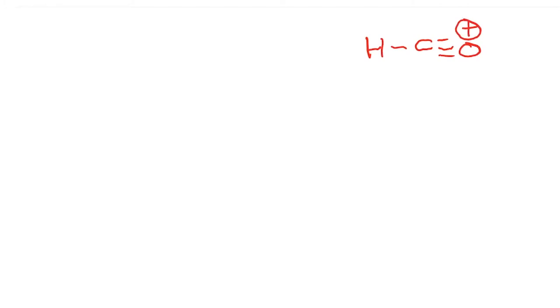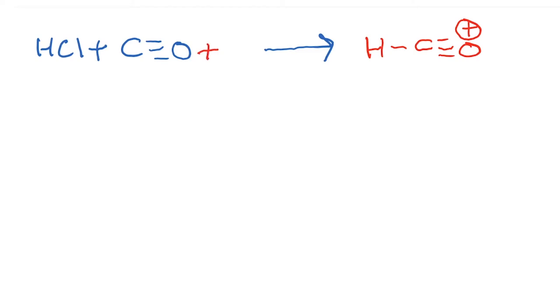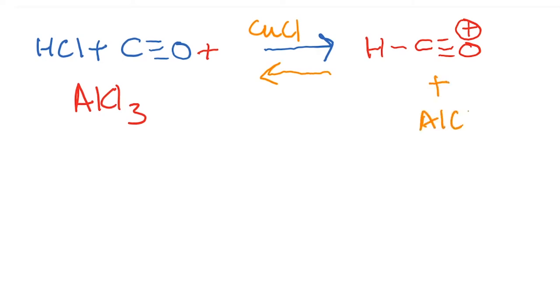The conditions are as follows: basically we need to generate HC≡O+, and this can be done by the reaction of HCl plus carbon monoxide, plus a Lewis acid which is AlCl3, and you also need CuCl. This is usually a reversible reaction, so you will get HC≡O+ and AlCl4- — a familiar reagent for us.